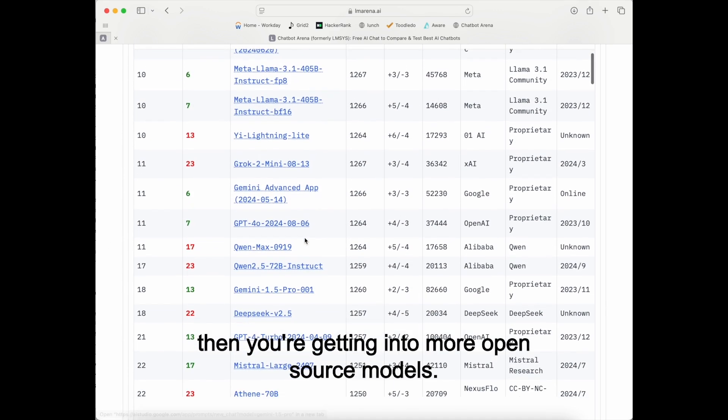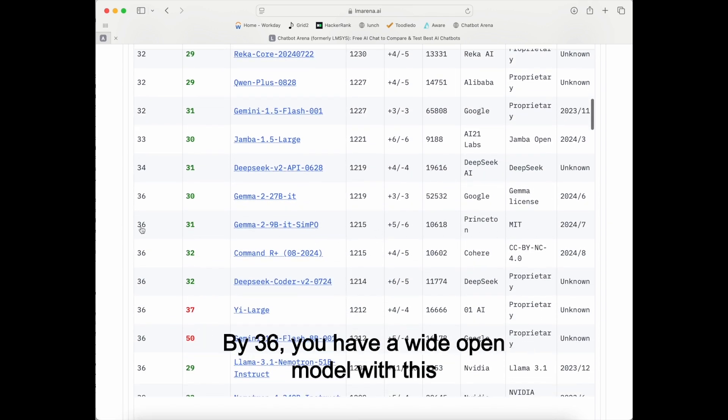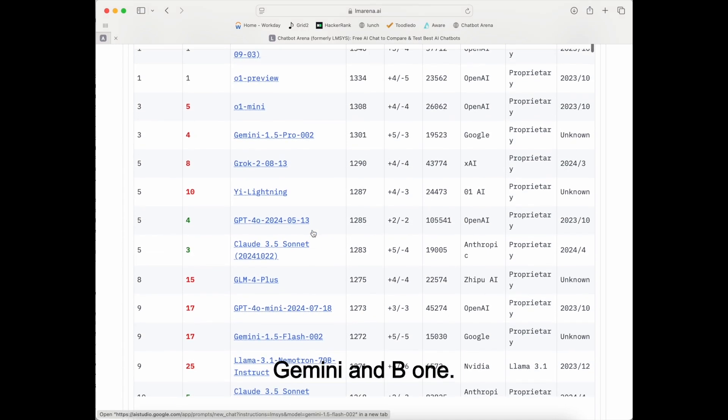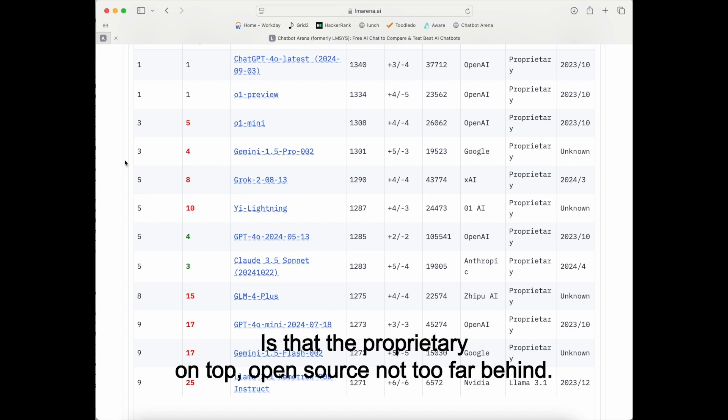Then you're getting into more open source models. By 36, you have a wide open model with this Gemma 9B. One, so that's basically how they rank, is that the proprietor on top, open source not too far behind.